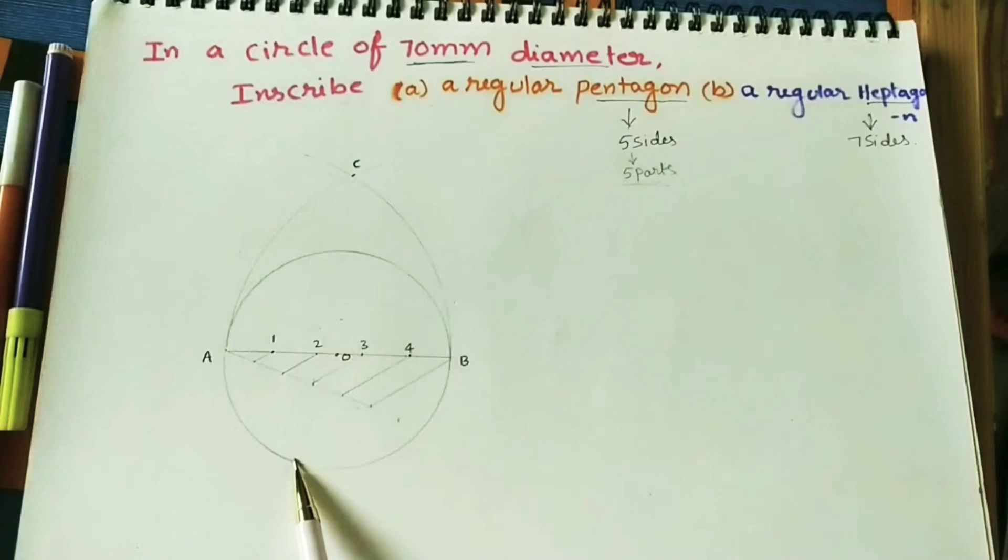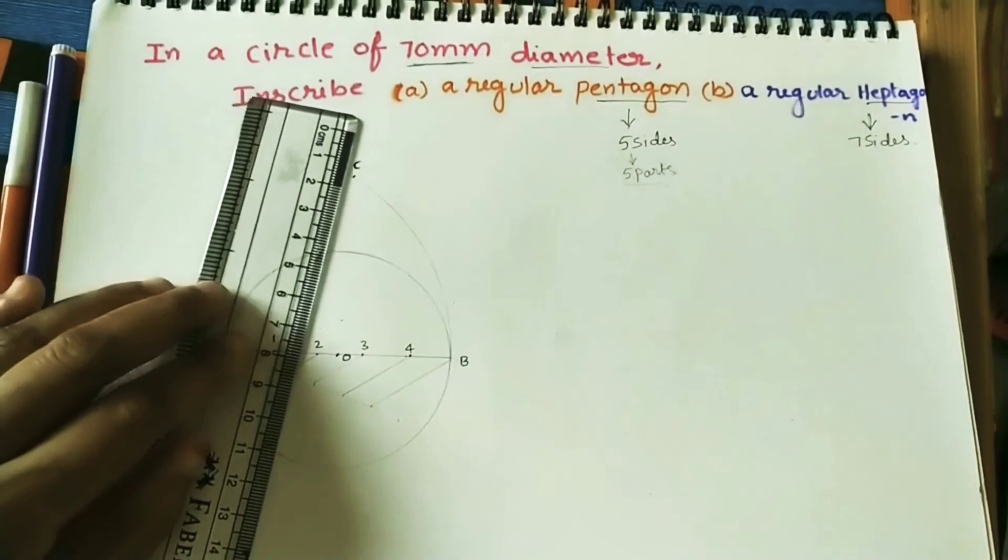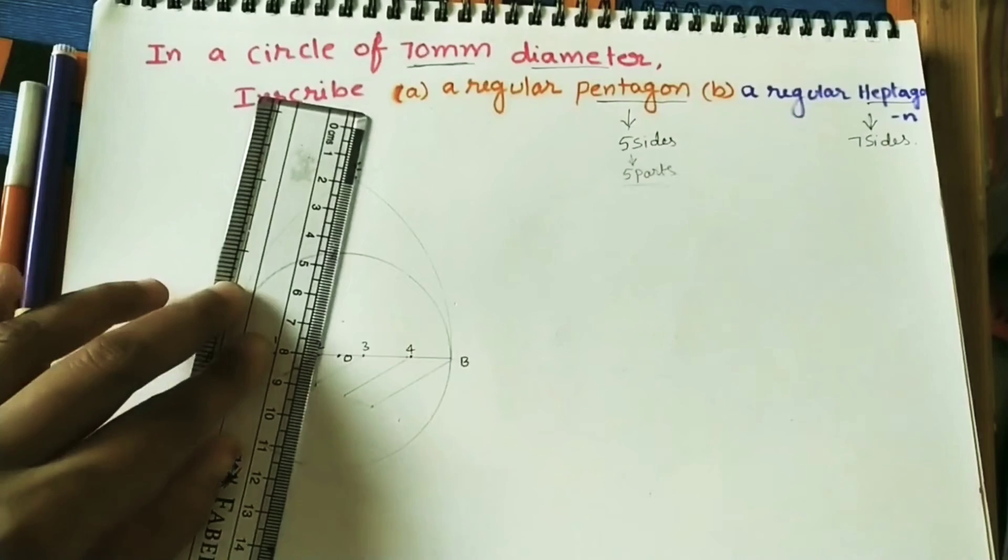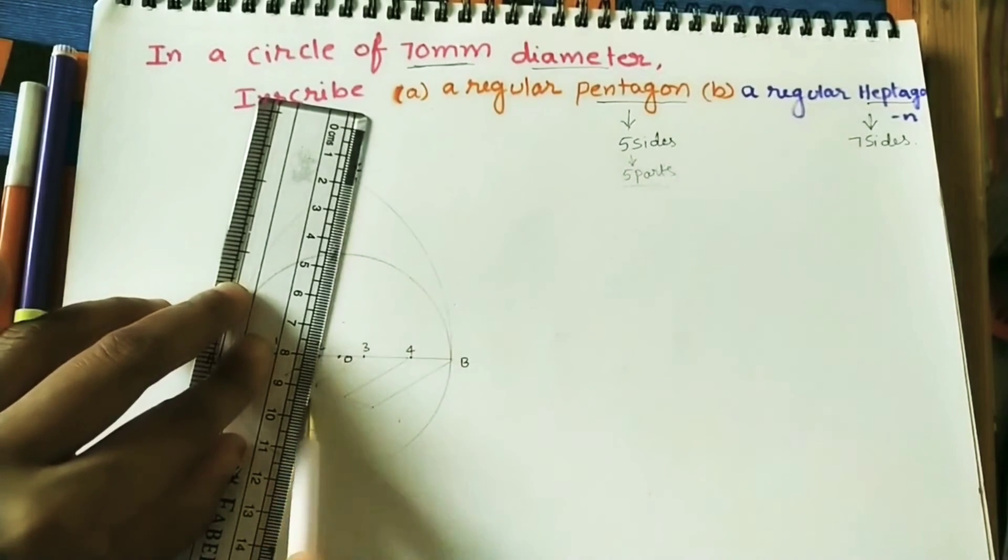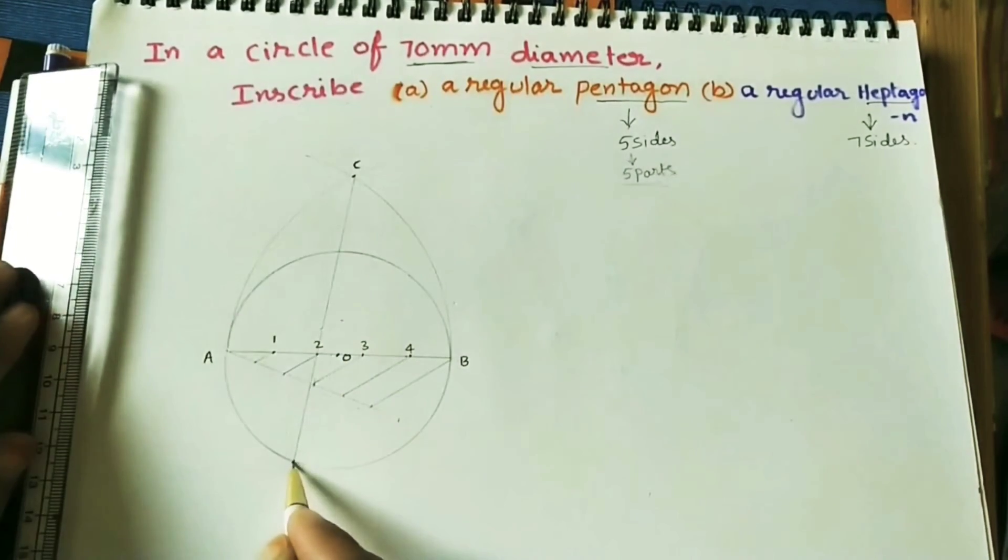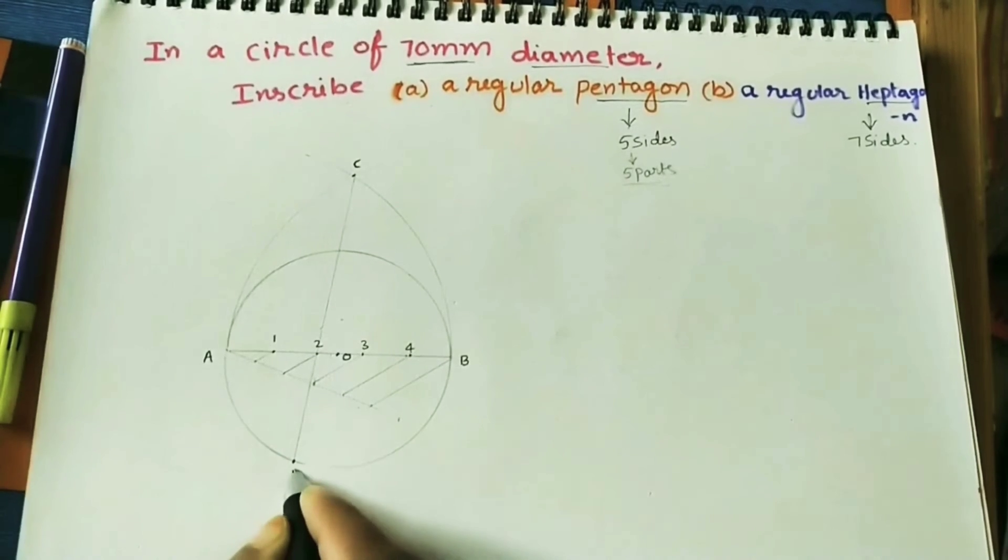Join C to 2. For doing any polygon, join C to 2nd point and extend the line up to the circle. Like this. Take this intersection point as D point. AD is length of the side length of the polygon.